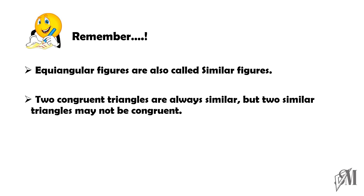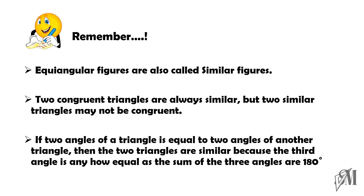If two angles of a triangle are equal to two angles of another triangle, then the two triangles are similar, because definitely the remaining third angles must be equal — the sum of three angles in a triangle is always 180°. These three factors are to be kept in mind when you deal with equiangular figures.